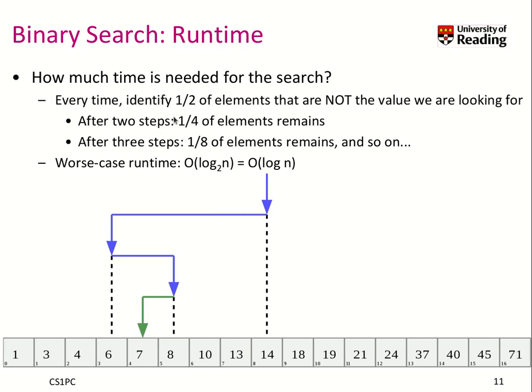Now, we can do a little analysis. How much time do we need for the search? Basically, every time we identify one-half of the remaining elements that are not the values we are looking for. That means, after two steps, we have one-fourth of the elements remaining. After three steps, one-eighth. If you go on with the analysis, you will find out that the worst-case runtime is O of log to the power of 2, n. Which is actually the same, as you will see later, than O of log n. It's just a logarithmic number of searches. In this case here, we needed four searches: one, two, three, four searches, but we had about sixteen elements. That corresponds to log 2 of n, which is four.